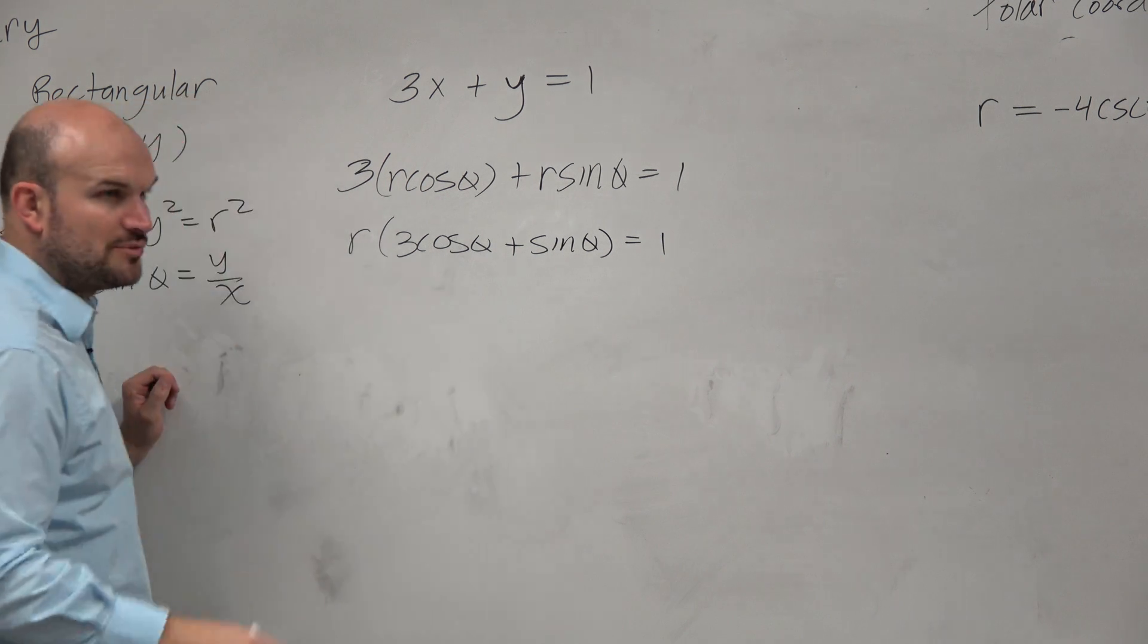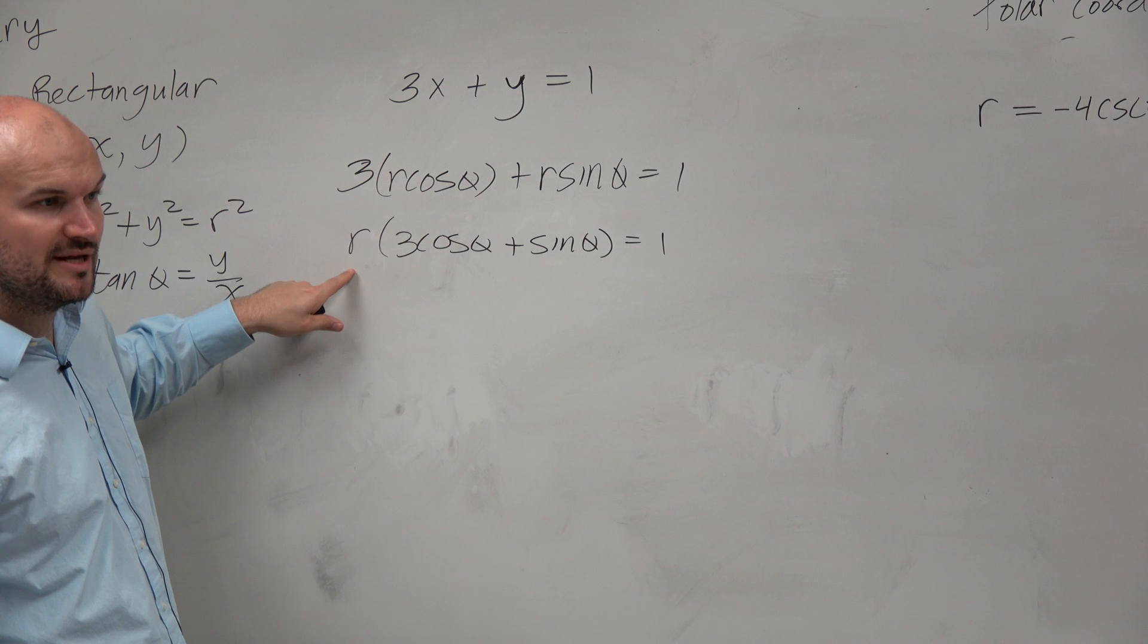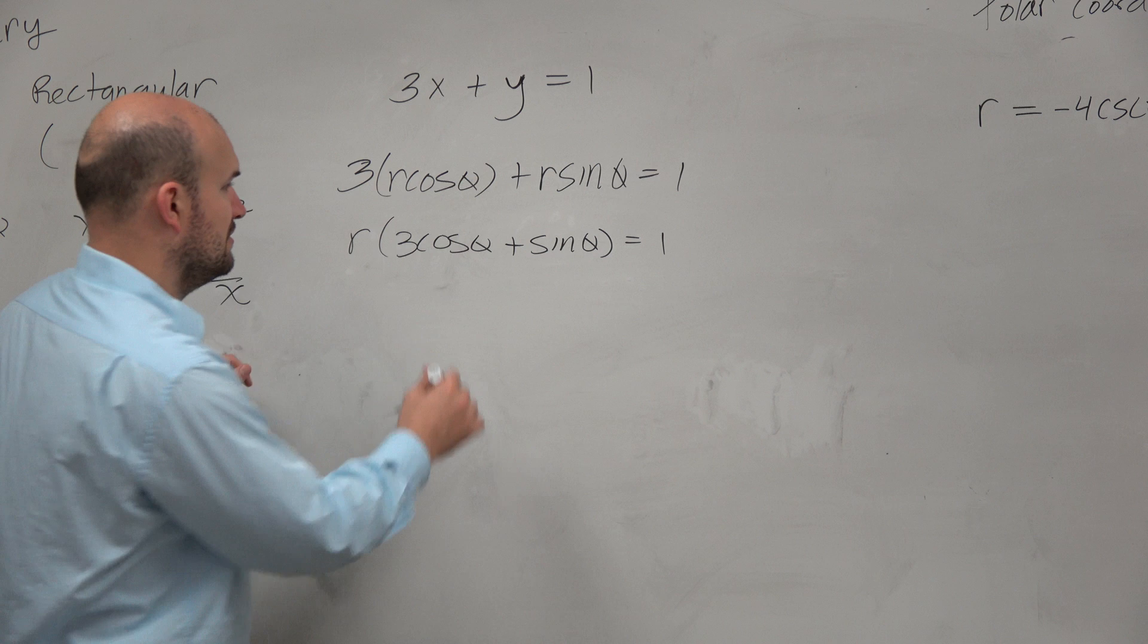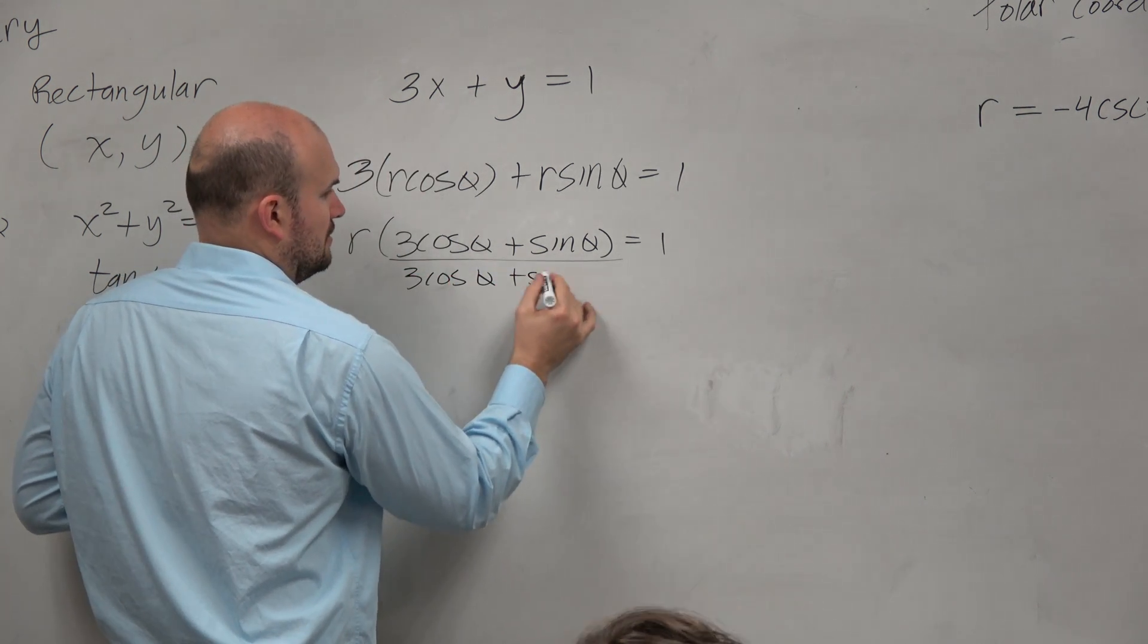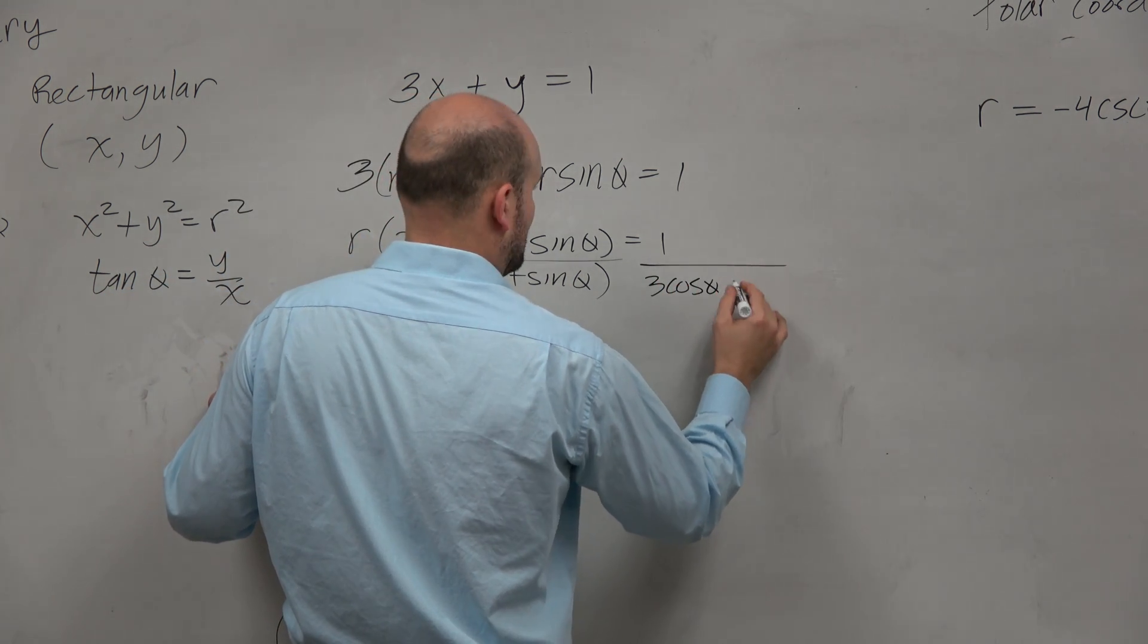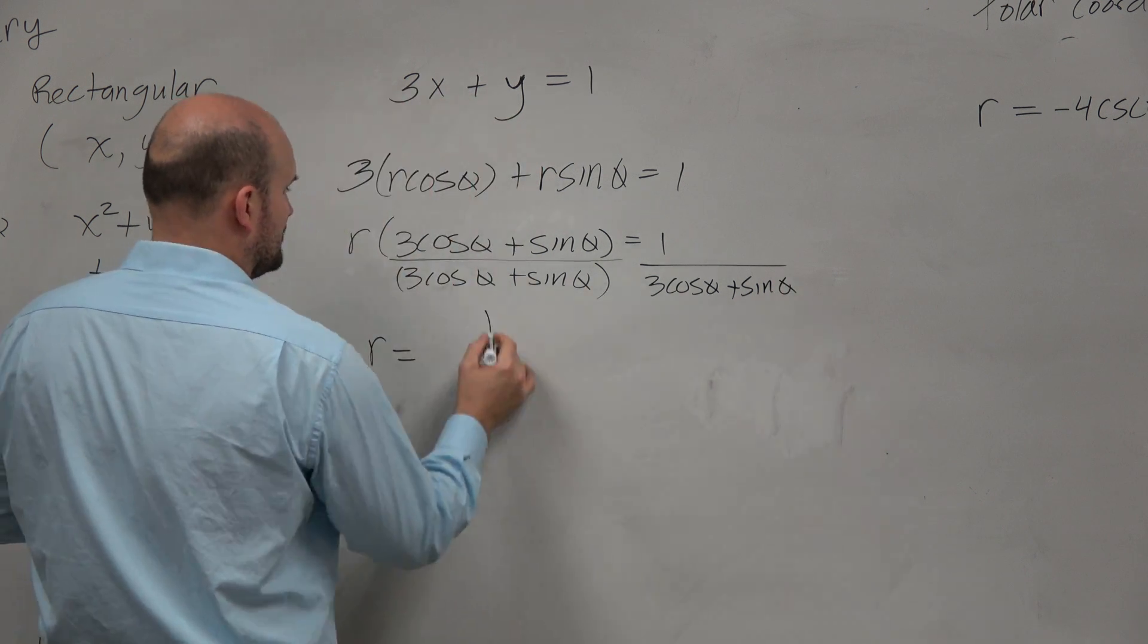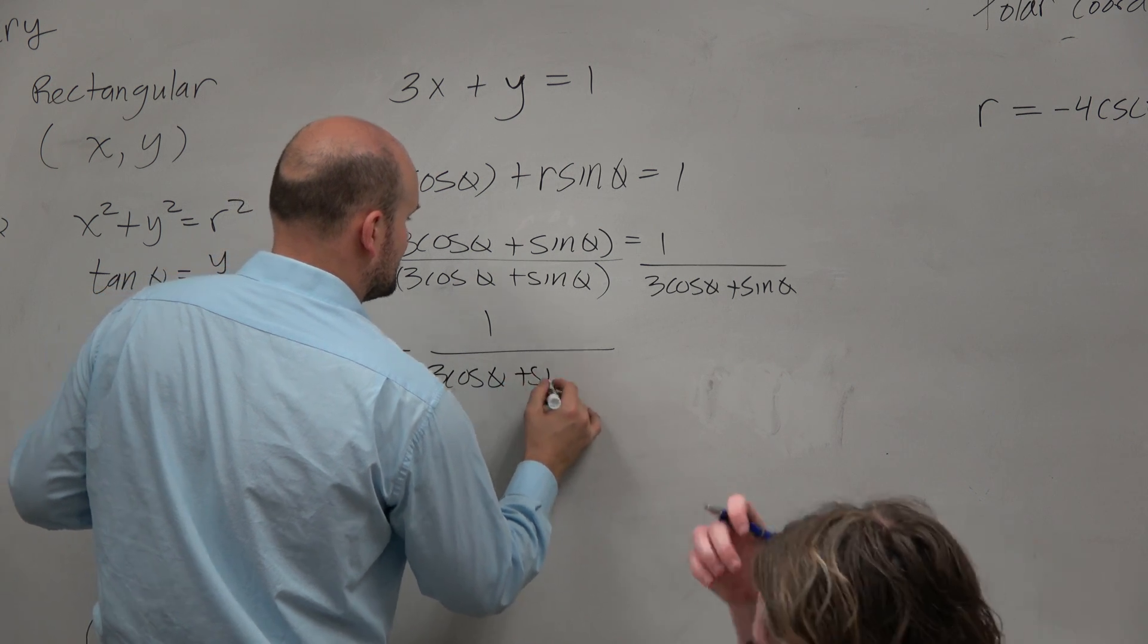Now, going back to algebra one days, if you want to solve for r, apply the inverse operation of what's being applied to r. Well, r is being multiplied by this quantity. So therefore, we just need to divide by that quantity on both sides. And I'm going to waste a lot of ink writing this whole thing out. So r equals 1 over 3 cosine of theta plus sine of theta.